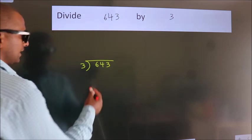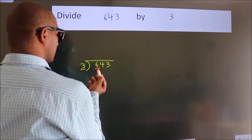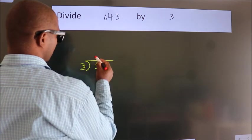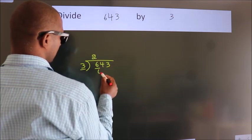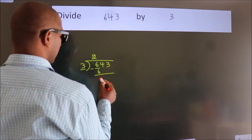Next, here we have 6, here 3. When do we get 6? In the 3 table: 3 times 2 is 6. Now we subtract and get 0.